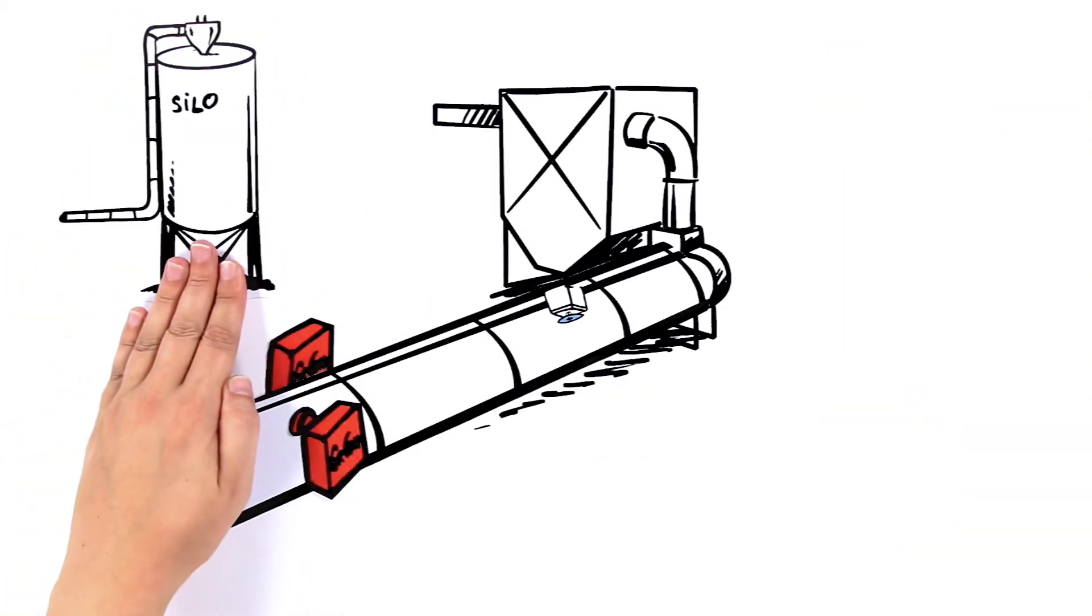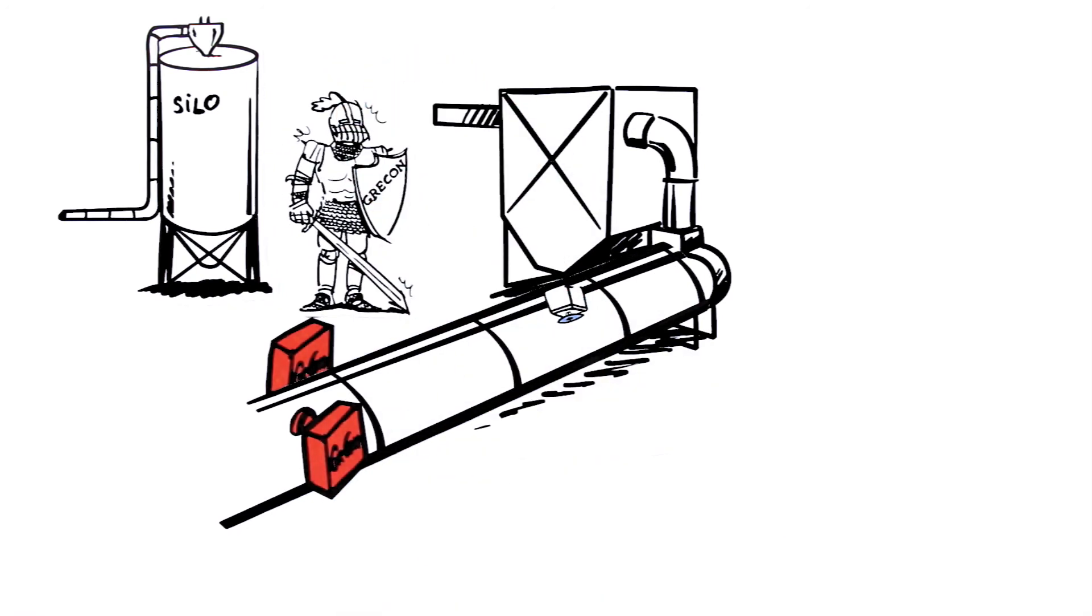The areas at risk, such as filters and silos, are protected, while the production process continues uninterrupted.